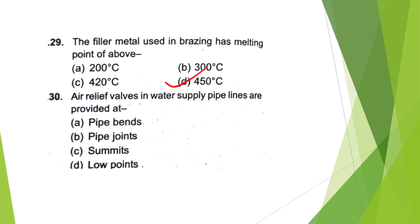Air relief valves in water supply lines are provided at — Pipe bends, Pipe joints, Summits, or Low points? The answer is option D — Summits.